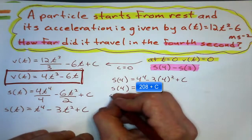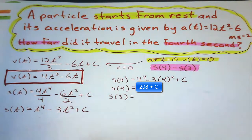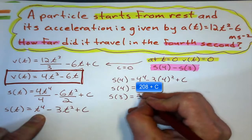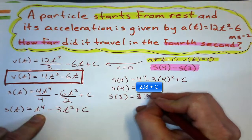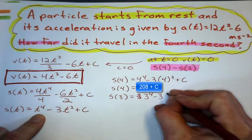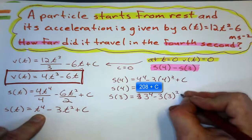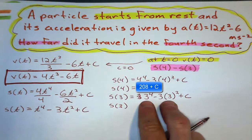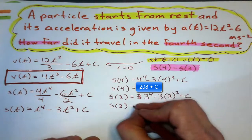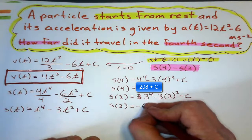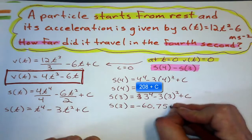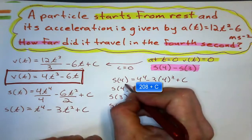What about after three seconds? Substituting three into the displacement equation: three to the power of four minus three times three squared plus C. Working that out, I get — after some corrections — 54 plus C. There's also an intermediate value of negative 60.75 plus C that comes up, but after corrections the value is 54 plus C.